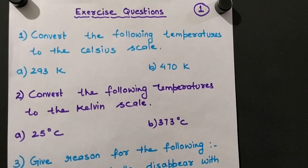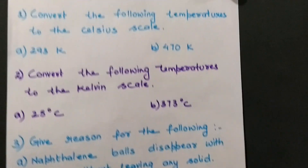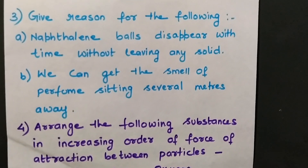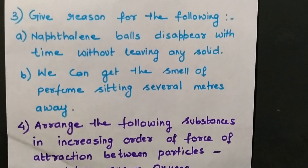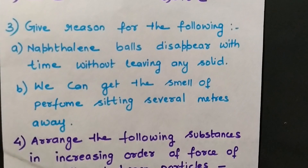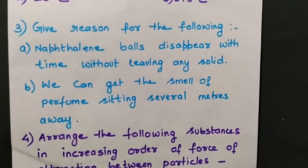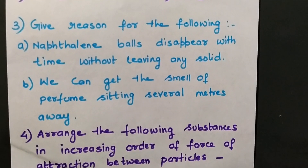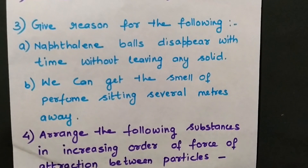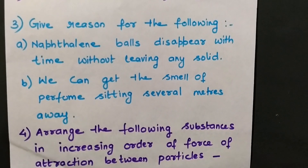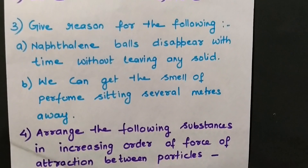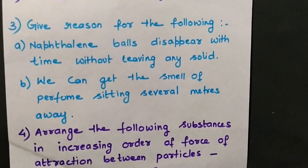Question 3: Give reasons why naphthalene balls disappear with time without leaving any solid. Naphthalene has a tendency to sublime — it undergoes the process of sublimation, changing directly from solid to gaseous state without converting into liquid state. Therefore, the size of the naphthalene balls slowly decreases and ultimately disappears without leaving any solid residue behind.